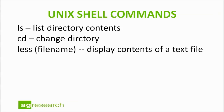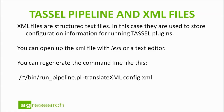Today we're going to use a few Unix shell commands. You don't need to be an expert but you will need to learn just a few: LS, which does a list of directory contents; CD, which is change directory; and less followed by a file name, which displays the contents of a text file. The TASSEL pipeline can be run with a very long pipeline command or the options can be stored in XML files. XML files are just structured text files used to store the configuration for running the different TASSEL plugins. You can open an XML file with less or a text editor and regenerate the command line.